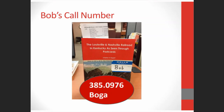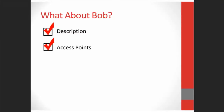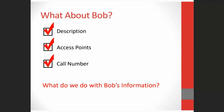After much deliberation, we have Bob's call number and cutter. We use the first four letters of the author's last name as our cutter, so Bob's number is 385.0976 BOGA. We've learned a lot about Bob on our journey — we have a description for Bob, we have access points, and we also have a call number. But what do we do with all of Bob's information, and how do we make it searchable?